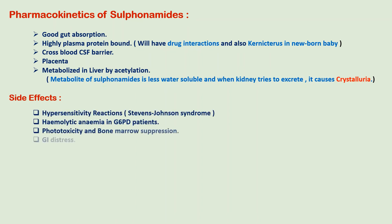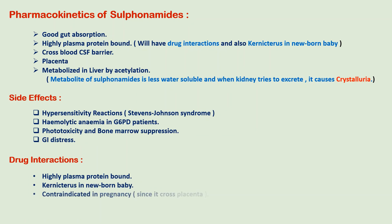Regarding side effects, hypersensitivity reactions — especially Stevens-Johnson syndrome — may develop in the form of rashes, urticaria, and fever. Sulfonamides cause hemolytic anemia in glucose-6-phosphate dehydrogenase deficient patients. They are associated with phototoxicity and bone marrow suppression leading to leukopenia, neutropenia, and thrombocytopenia. They also cause GI disturbances. Drug interactions occur due to high plasma protein binding, and they displace phenytoin, methotrexate, etc., increasing their activity.